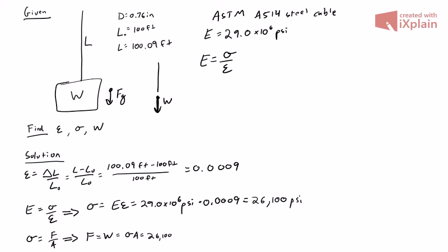Times the area. Again, it's a circle, so area is pi times diameter squared over four. That's times pi times 0.76 inches squared all over four. Inches cancels inches and we're left with just 11,840 pounds.